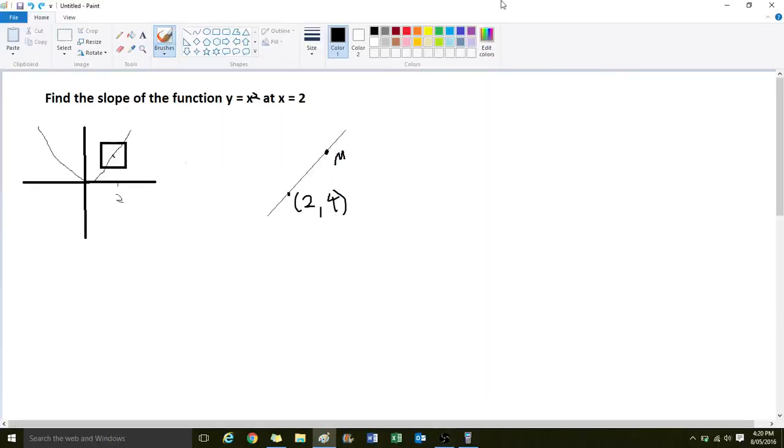Okay, so what we're looking at here is how we can find the slope of the function y equals x squared at x equals 2, algebraically. We're working out the instantaneous rate of change of the function when x is equal to 2.